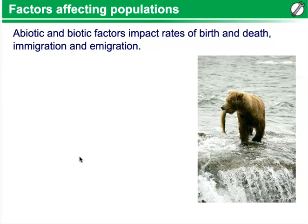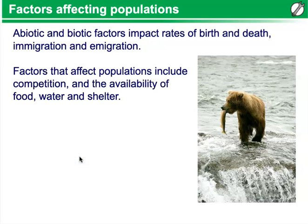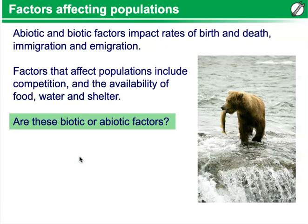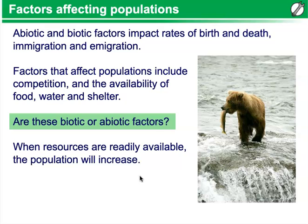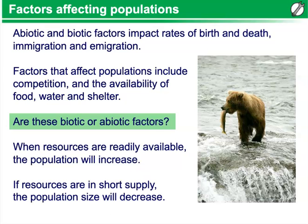Factors affecting population. Abiotic and biotic factors impact rates of birth and death, as well as immigration and emigration. Factors that affect populations include competition and the availability of food, water, and shelter. When resources are readily available, the population will increase. If resources are in short supply, the population size will decrease.